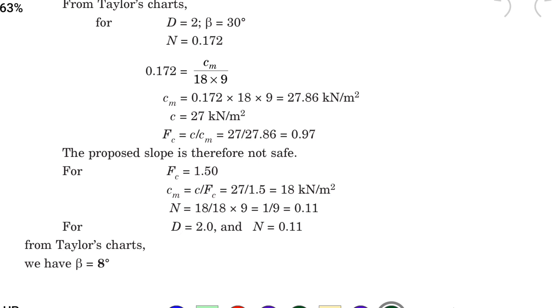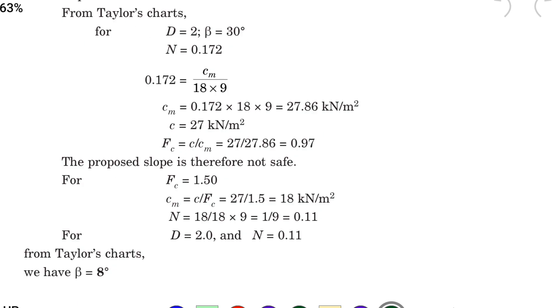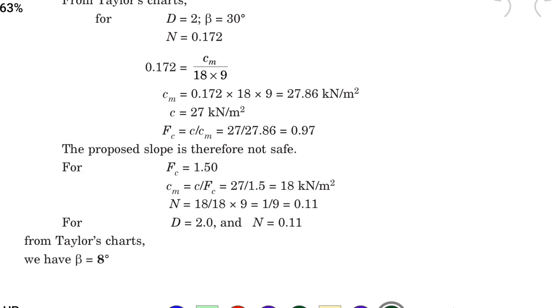So now N equal to 18 by 18 into 9. So now 1 divided by 9 equal to 0.11. So now D is equal to 2.0 and N equal to 0.11.